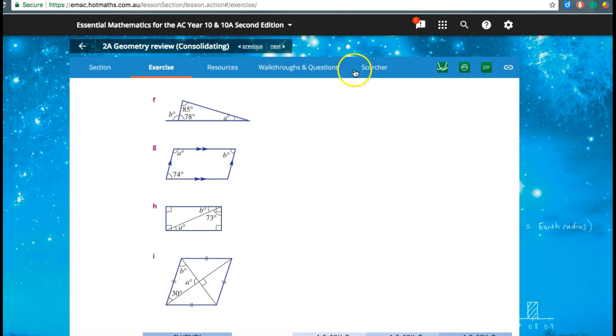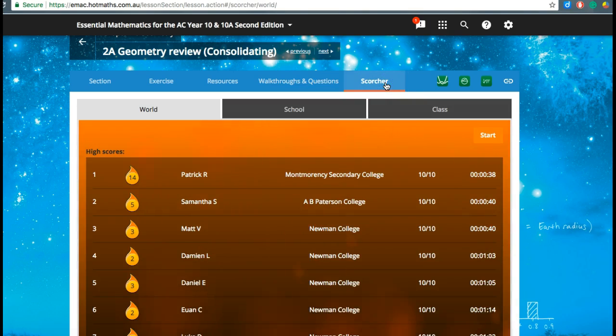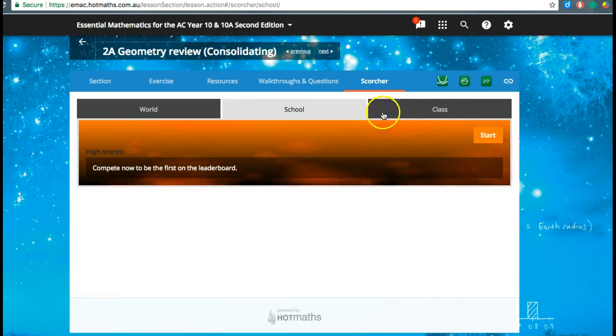The last thing I'll point out is some of the other resources that come here. We have walkthroughs and questions which help the kids to go through again questions in that same chapter, walkthroughs and summaries, plus there's three quizzes for every section that they can actually do and see how well they go. On top of that, they can also go in and challenge people from other colleges and other schools around the world on this scorcher. These are quizzes, and the quizzes here are based on that section that they're doing. They can look at how well they do compared to students at other schools, within the school, or within their class.